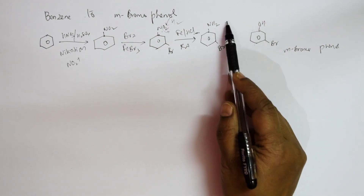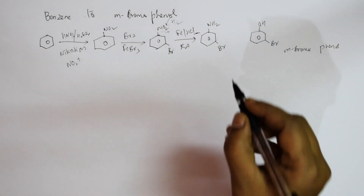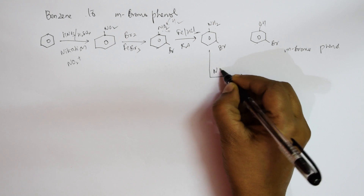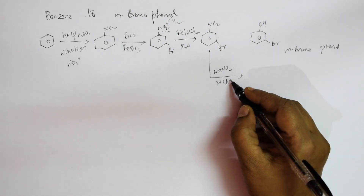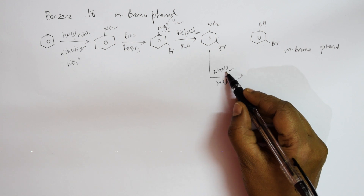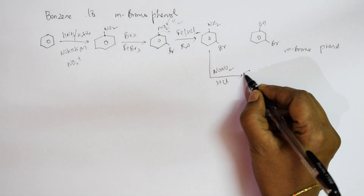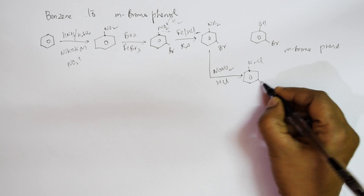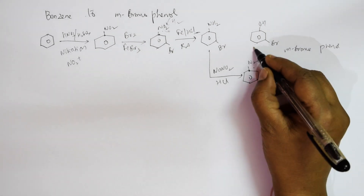Now I have to convert NH2 (amine) to an alcohol (OH). OH replaces Cl, so I need a group that introduces Cl. I'll use NaNO2 and HCl — Sandmeyer's reaction — to convert the amine to a diazonium salt (N2Cl), with Br still present.